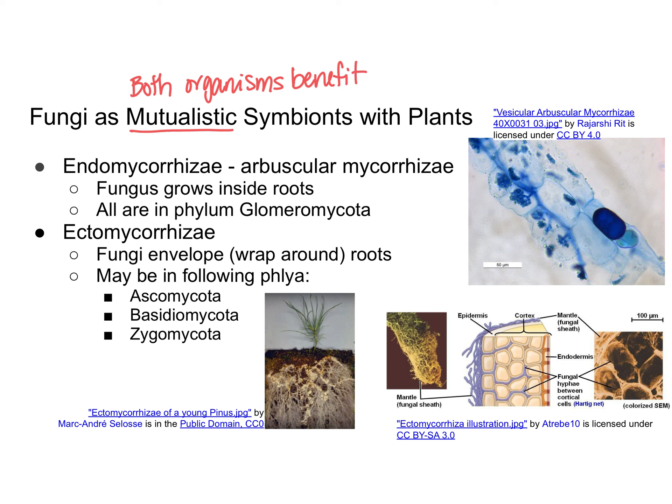When a fungus is in a symbiotic relationship with the root of a plant, it's known as a mycorrhizae. There are two different types of mycorrhizae: endomycorrhizae — 'endo' means inside — and ectomycorrhizae — 'ecto' means outside. If a fungus is an endomycorrhizae, it's also known as an arbuscular mycorrhizae. This is a fungus that actually grows inside the cells of the roots of a plant, and all fungi with this endomycorrhizae relationship are found in the phylum Glomeromycota.